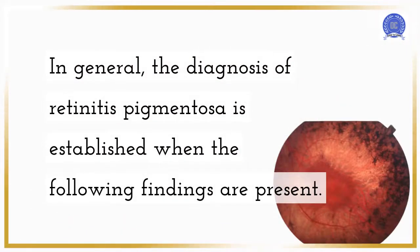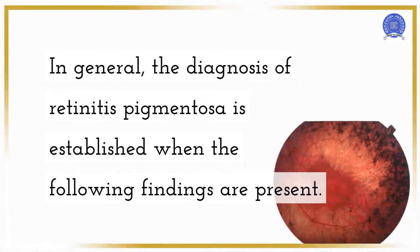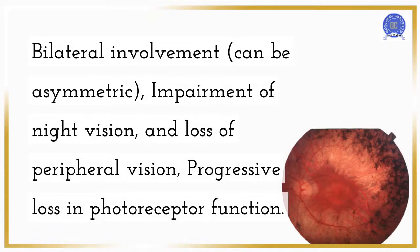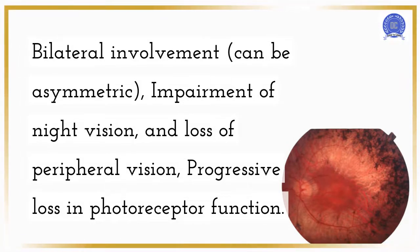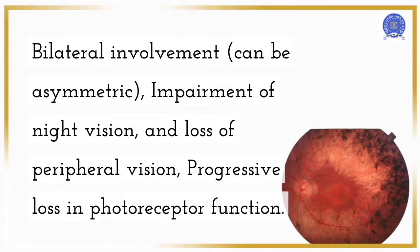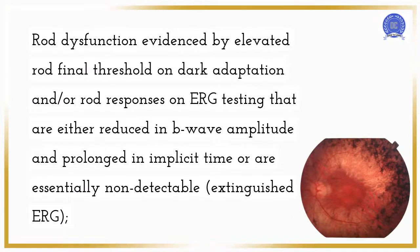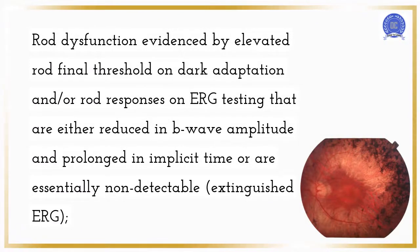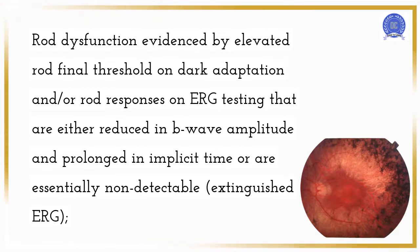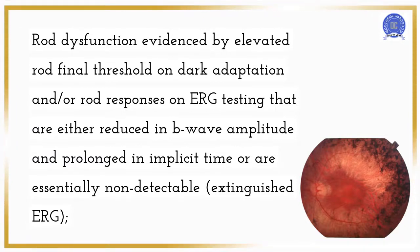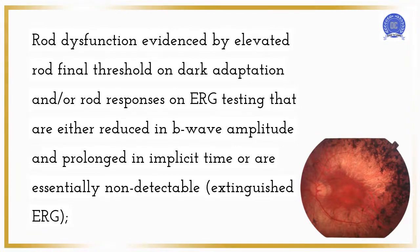The diagnosis of retinitis pigmentosa is established when the following findings are present: bilateral involvement (can be asymmetric), impairment of night vision, loss of peripheral vision, and progressive loss in photoreceptor function. Rod dysfunction is evidenced by elevated rod final threshold on dark adaptation and/or rod responses on ERG testing that are either reduced in B-wave amplitude and prolonged in implicit time, or are essentially non-detectable — an extinguished ERG.